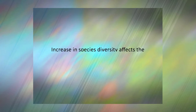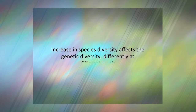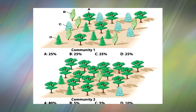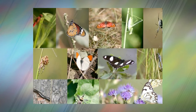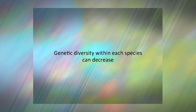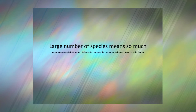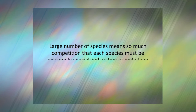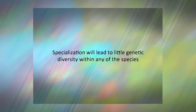An increase in species diversity can also affect genetic diversity differently at different levels. If there are many species, the genetic diversity at the community level will be larger than when there are fewer species. On the other hand, genetic diversity within each species can decrease. This can happen if the large number of species means so much competition that each species must be extremely specialized, such as only eating a single type of food. If they are so specialized, this specialization will lead to little genetic diversity within any of the species.